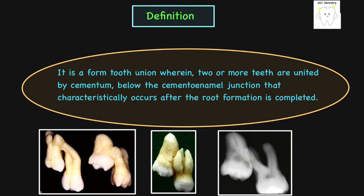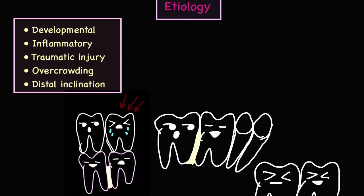Moving on to the etiology of concrescence. The most common etiological factor is developmental — it may occur as a type of developmental anomaly. The second cause is inflammatory. In cases of inflammatory cause, whenever there is a periapical infection of the milk tooth, such infection might stimulate a response in the periapex, leading to some developmental anomaly within the permanent tooth. So inflammatory reason is definitely one of the causes of concrescence.